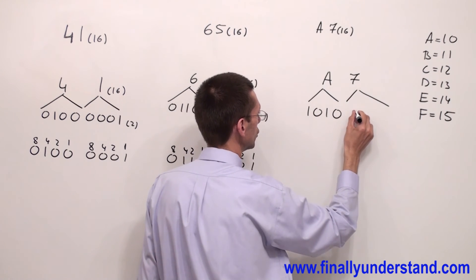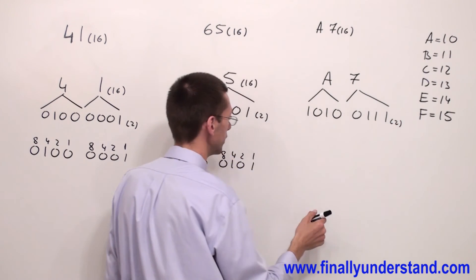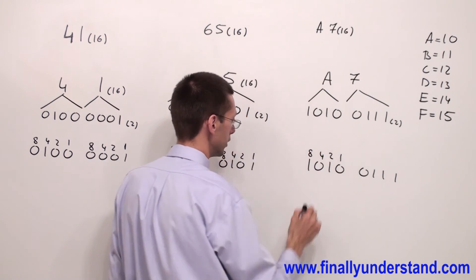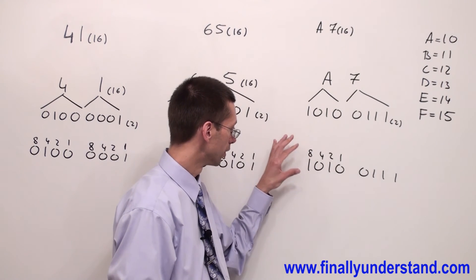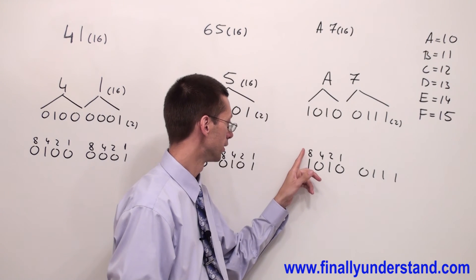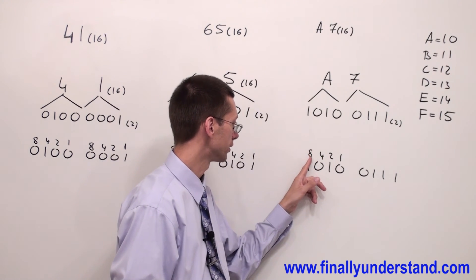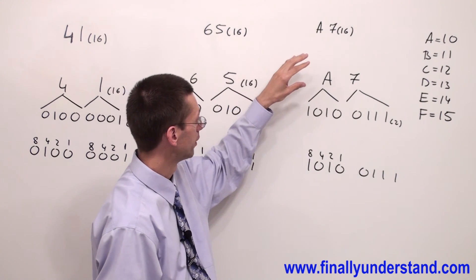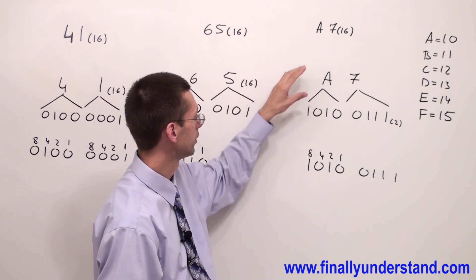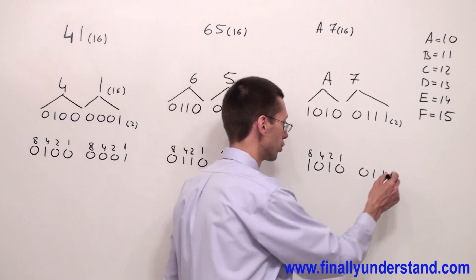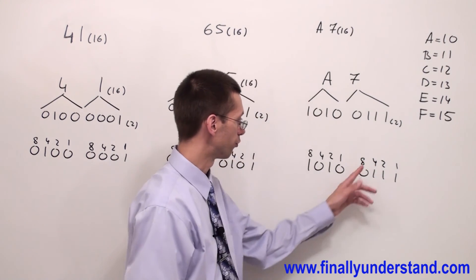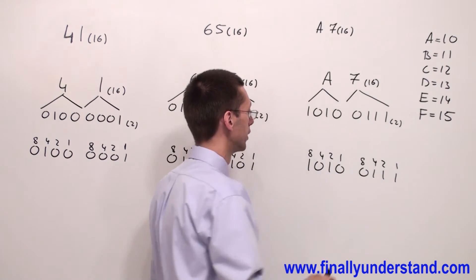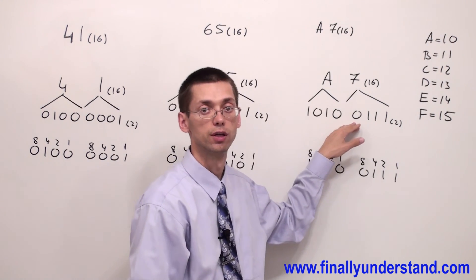And 7 is 0111. To verify: 10100111. The weights are 1, 2, 4, 8. For 1010: 8 plus 2 equals 10, which in hex is A. For 0111: 4 plus 2 plus 1 is 7, which is hex 7. So A7 in binary looks like 10100111 — this is the solution.